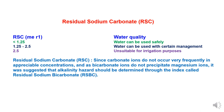On the basis of RSC — residual sodium carbonate — water is classified into three categories. First, where RSC is less than 1.25, the water quality is good and can be used safely for most crops. Second, where RSC is between 1.25 to 2.5, the water can be used with certain purification management or treatment. Third, where RSC is more than 2.5, it is unsuitable for irrigation. It was suggested that alkalinity hazards should be determined through the index RSBC — residual sodium bicarbonate — since carbonate ions do not occur very frequently in appreciable concentration, and bicarbonate ions do not precipitate magnesium ions.